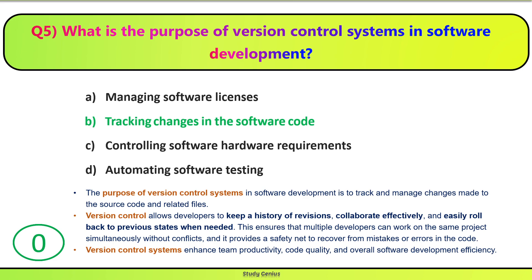Version control allows developers to keep a history of revisions, collaborate effectively, and easily roll back to previous states when needed. This ensures multiple developers can work on the same project simultaneously without conflicts, and provides a safety net to recover from mistakes or errors. Version control systems enhance team productivity, code quality, and overall software development efficiency.